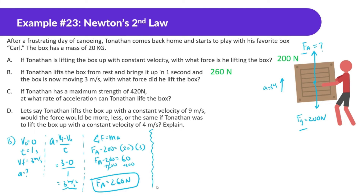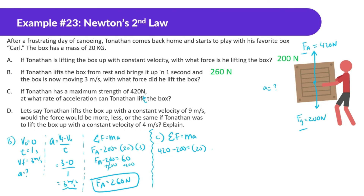Part C: If Tonton has a maximum strength of 420 Newtons, at what rate of acceleration can he lift the box? Sum of forces equals mass times acceleration: 420 minus 200 equals 20 times A. So 220 equals 20A. Dividing both sides by 20, the acceleration equals 11 meters per second squared.